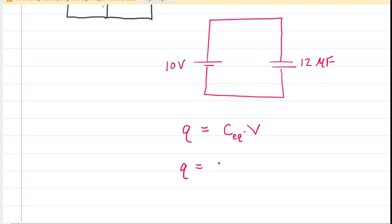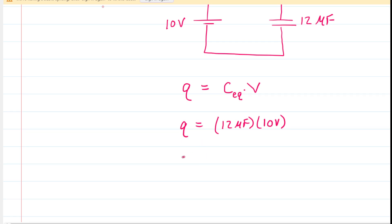We're going to plug in the equivalent capacitance as well as the potential difference. When we compute this, we can see that the total charge stored on the equivalent capacitor is 120. Since we used microfarads, this would be in microcoulombs.